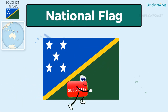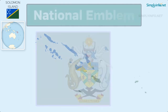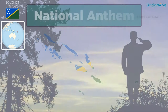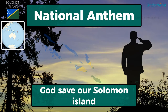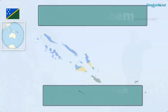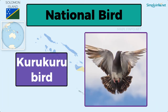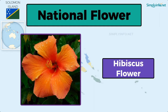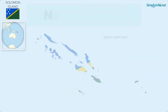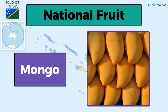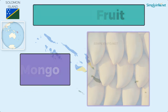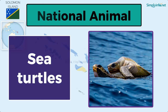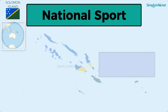National Flag. National Emblem. National Anthem: God Save Our Solomon Island. National Bird: Kurukura Bird. National Flower: Hibiscus Flower. National Fruit: Mango. National Animal: Sea Turtles. National Sport: Football.